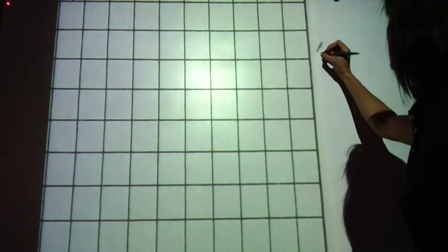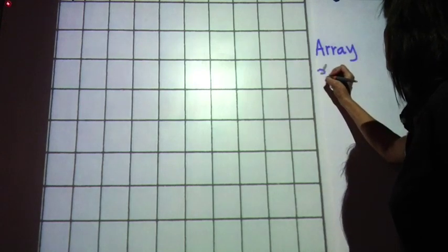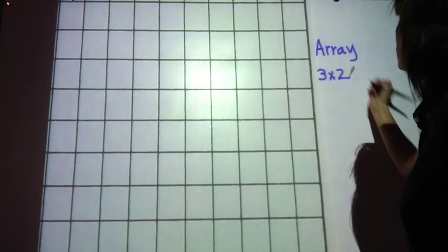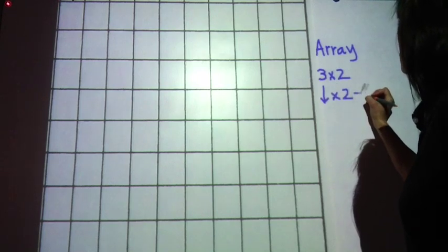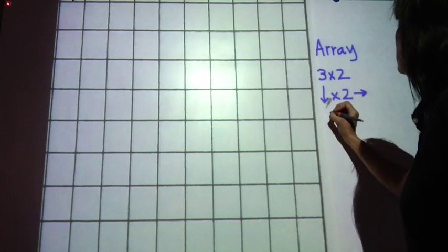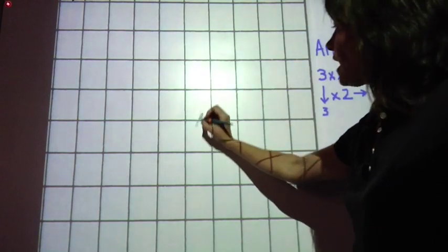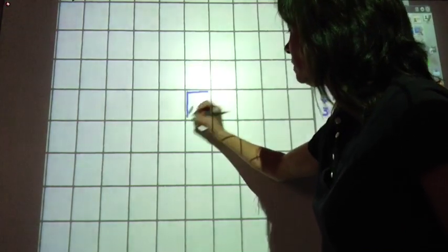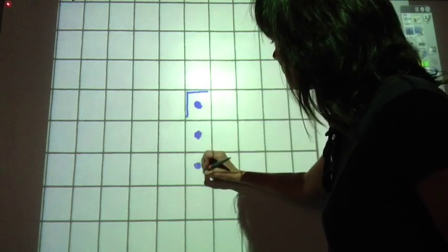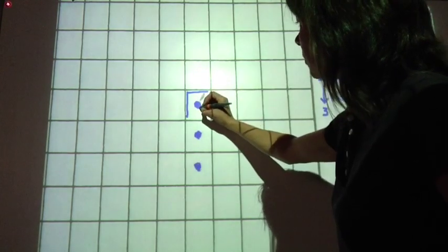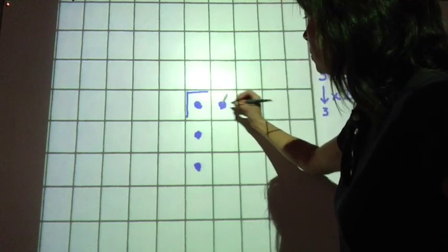To show this on a grid, to make it a little easier, if I was going to talk about the array 3 times 2, then I would know I'm going 3 down times 2 across. How I would show that is I would go over here and I would look at my magic corner and I would start here counting down: 1, 2, 3 down. Go back to my magic corner. Start counting from here: 1, 2 across.